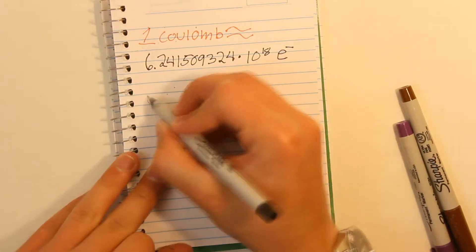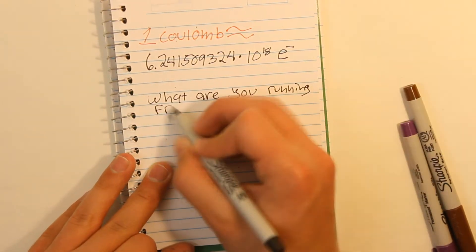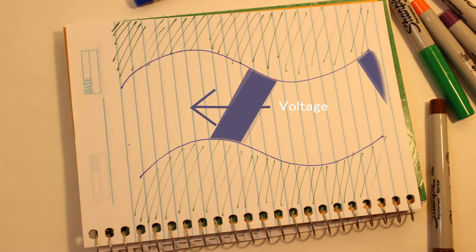But something needs to move six quintillion electrons, so what is it? Speaking in river terms, voltage is the force or pressure with which the water is moving.